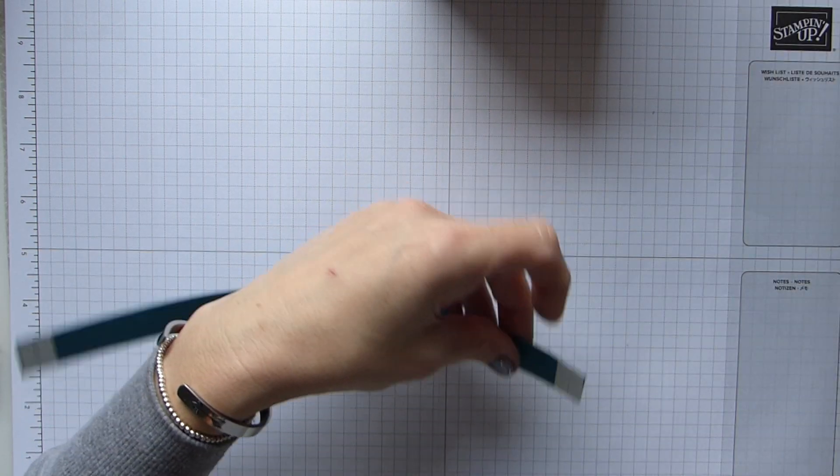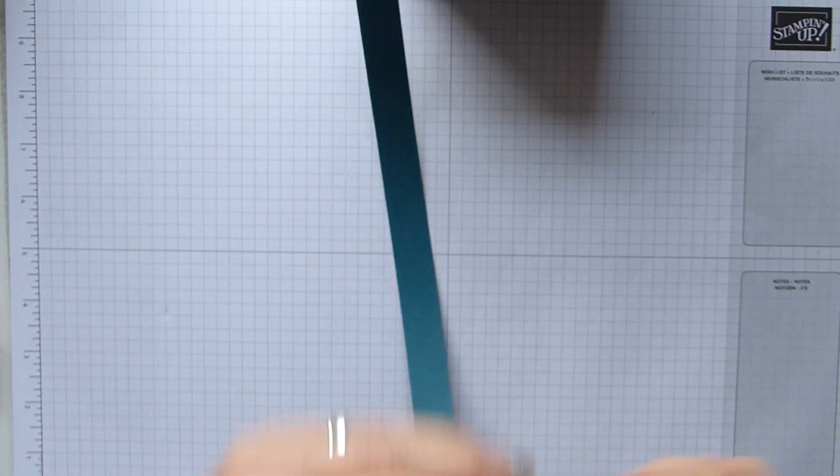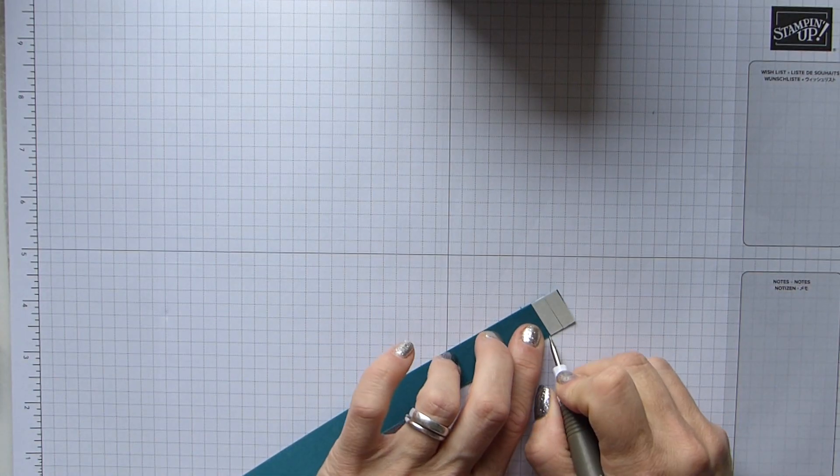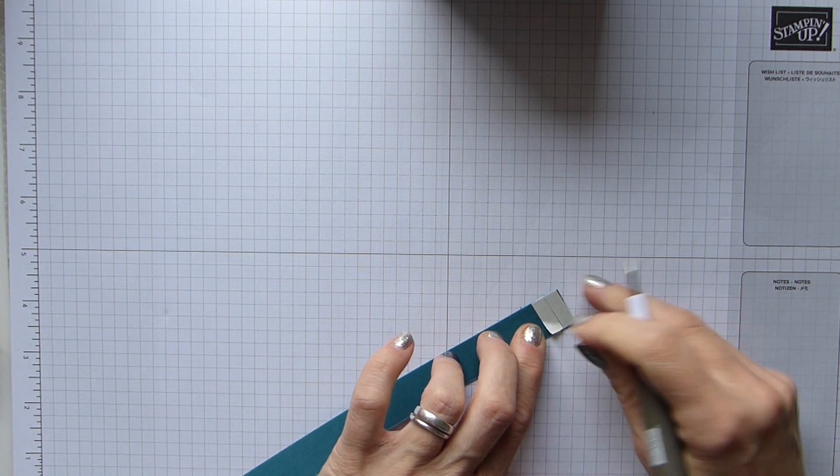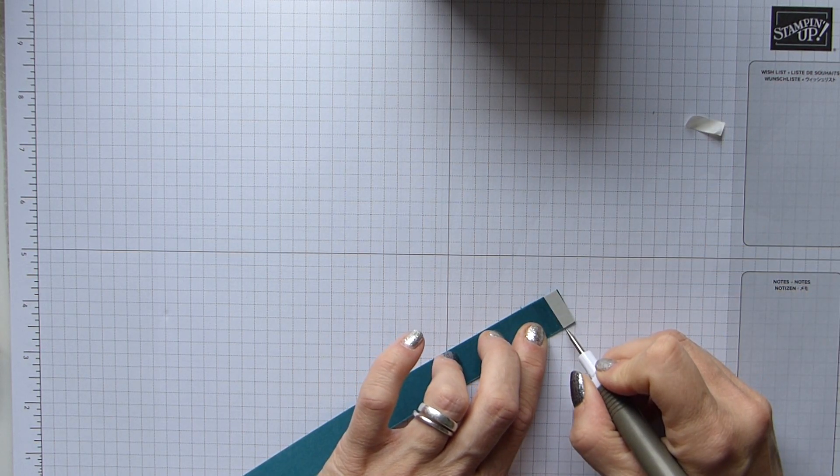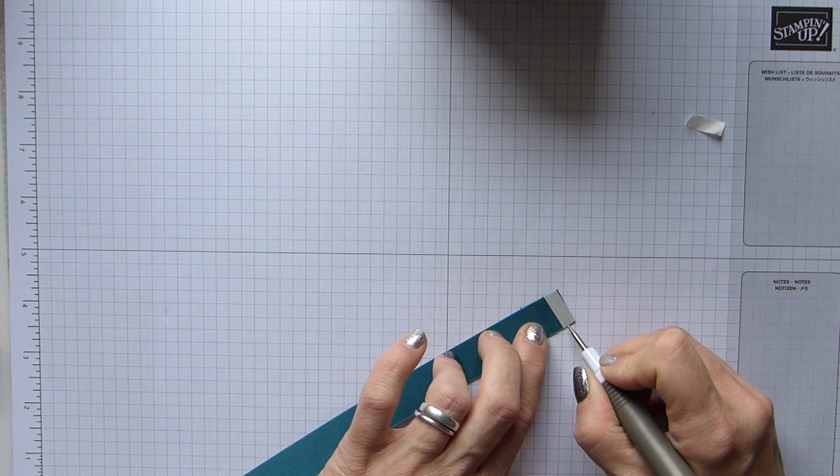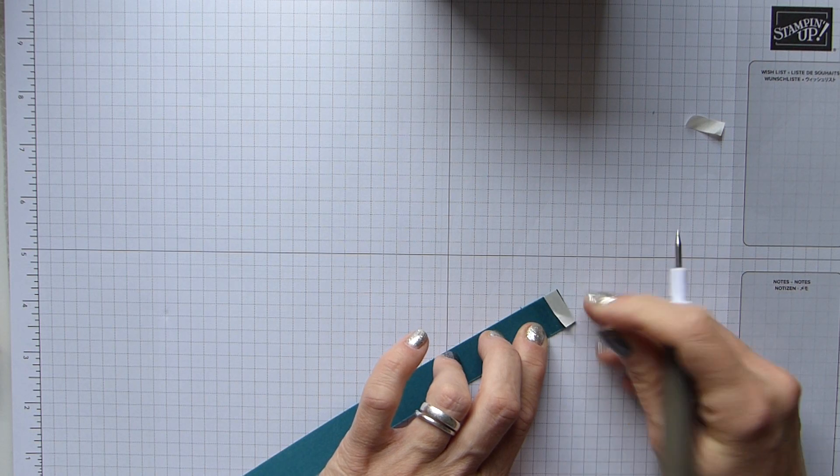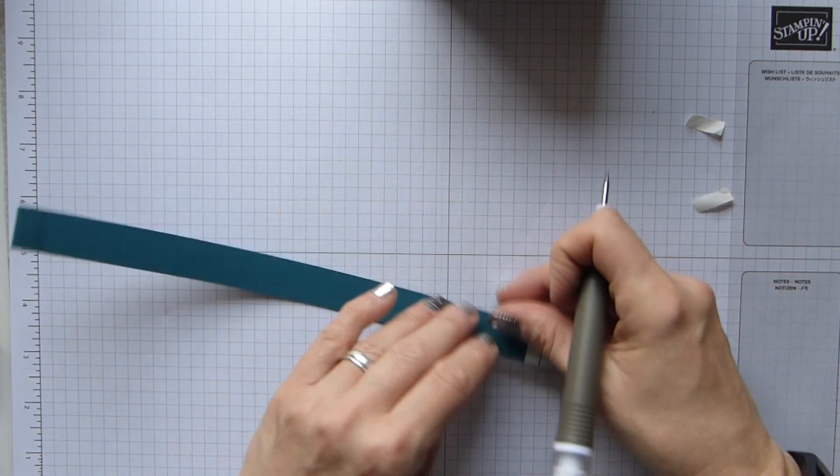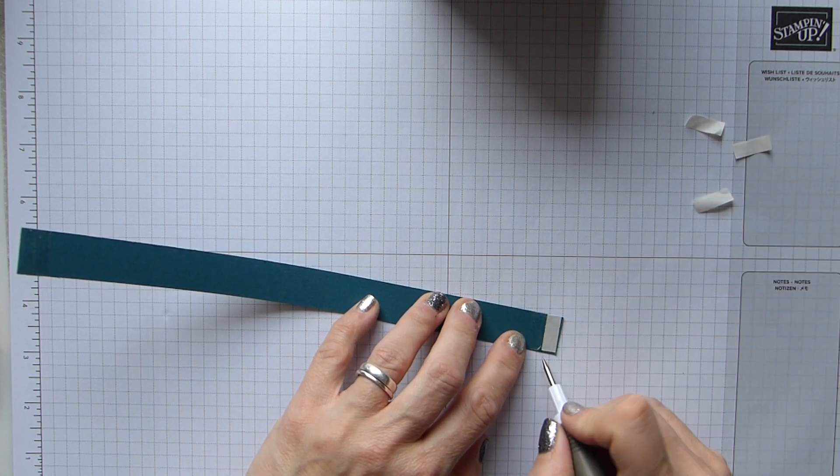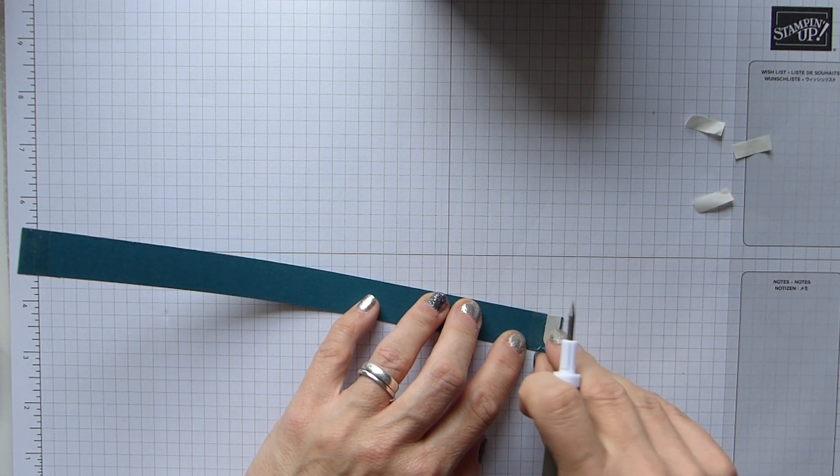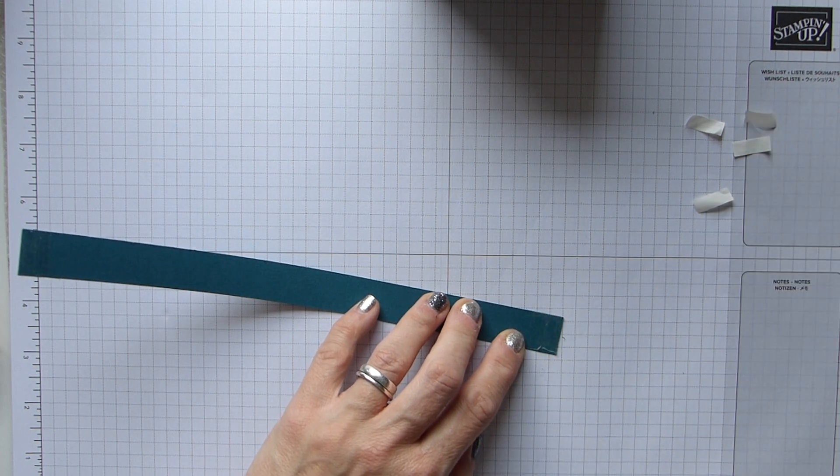And then I actually just use my bone folder to just assist it in curling. And because this is a bit thicker and stronger, I am actually going to use my Tear and Tape. So I'm just going to put one bit across there. What am I doing, honestly, I'm all fingers and thumbs today.